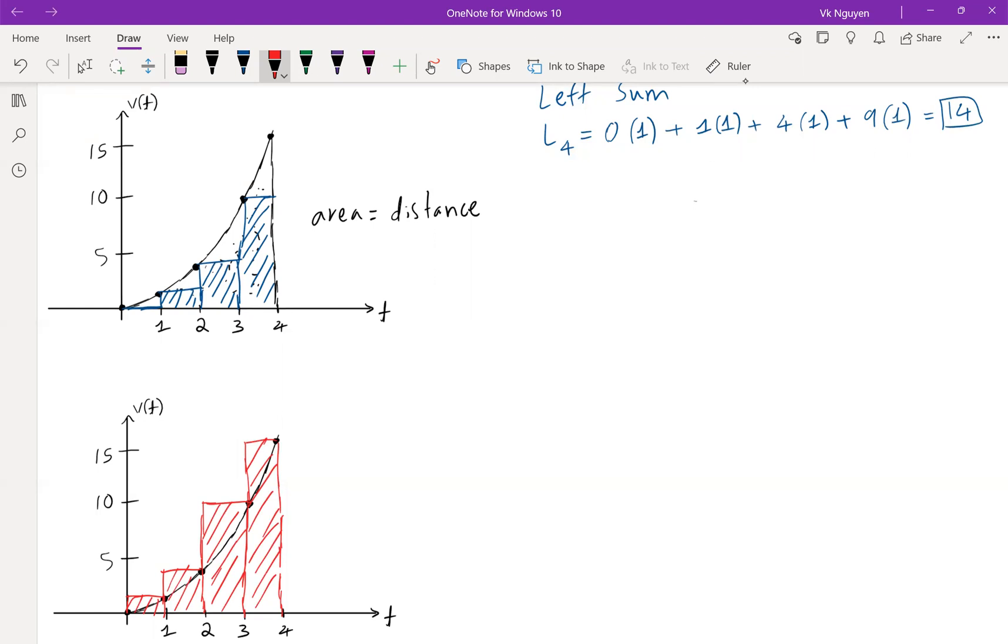We use the point on the right side, so let's call it the right sum. And because we used four rectangles, notation R sub 4. Similarly, it's going to be the length times width. One times one, plus four times one, plus nine times one, plus sixteen times one, and that gets us 30.